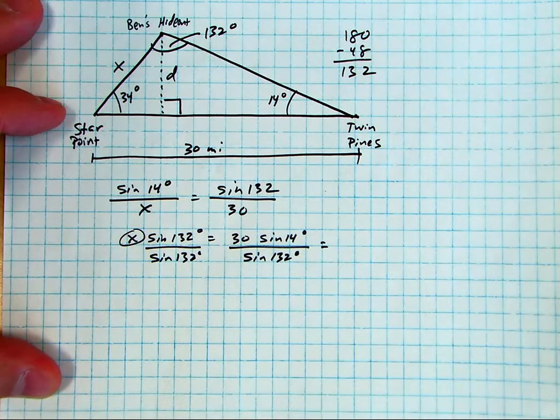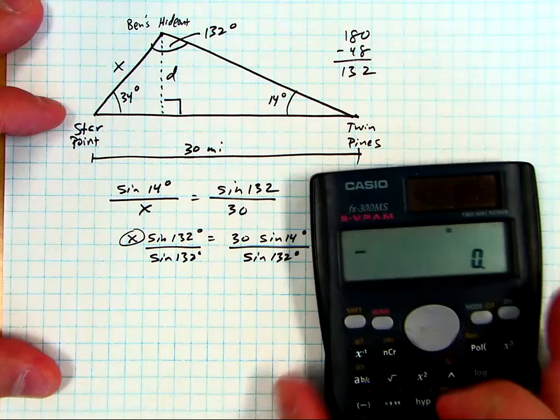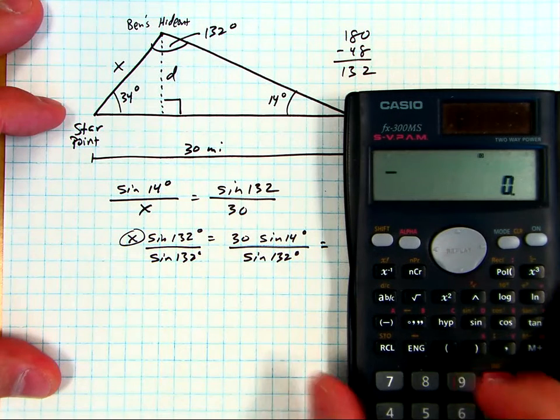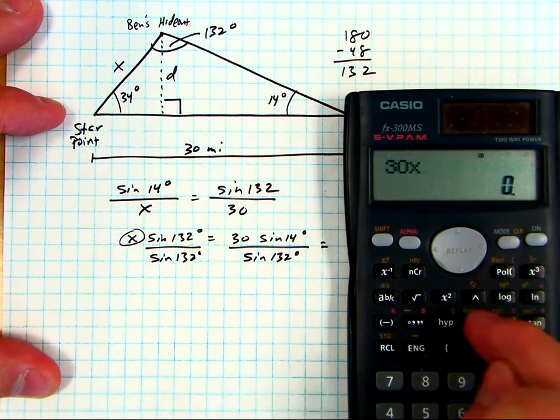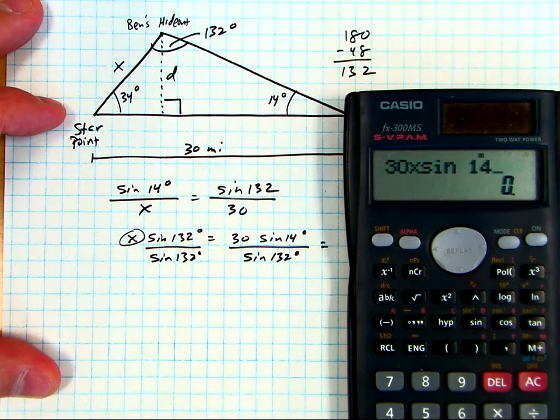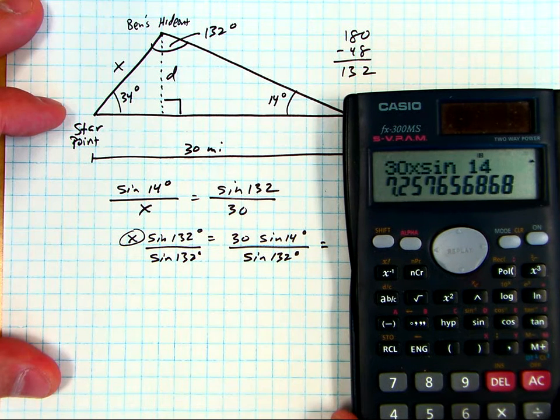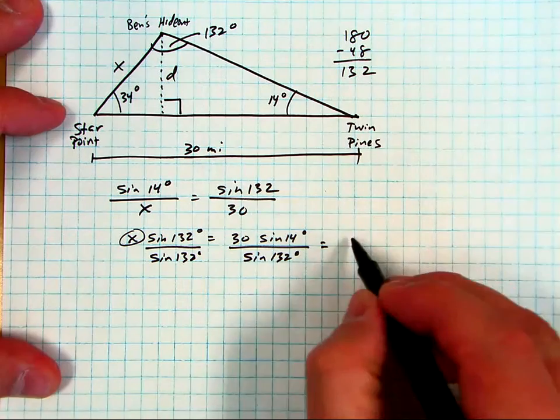Okay, let's see what that looks like in the calculator. 30 times sine of 14, just plug it in just like that and hit enter. Let's see, 7.258, let's round a little bit.